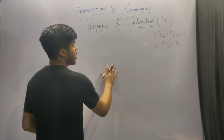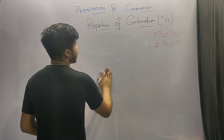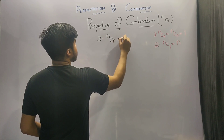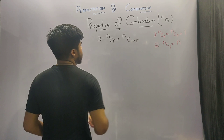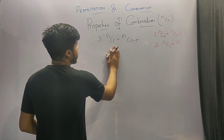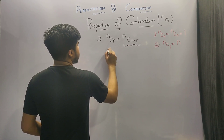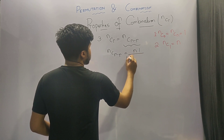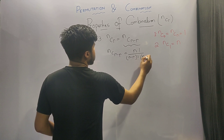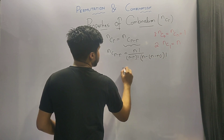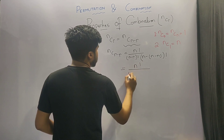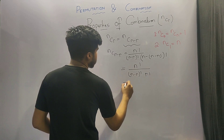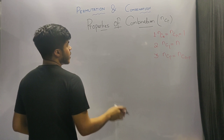The remaining properties of combination are very important, so please pay full attention. The third property says that nCr is equal to nC(n minus r). Proving this: nC(n minus r) equals n factorial upon n minus r factorial into n minus (n minus r) factorial, which is n factorial upon n minus r factorial into r factorial, which is equivalent to nCr.